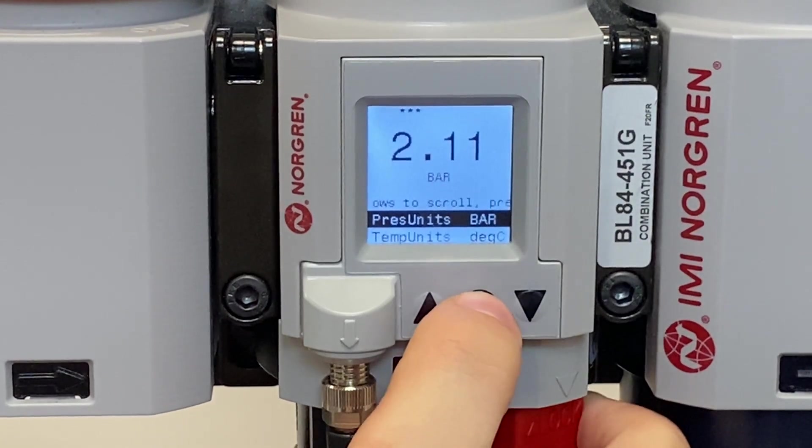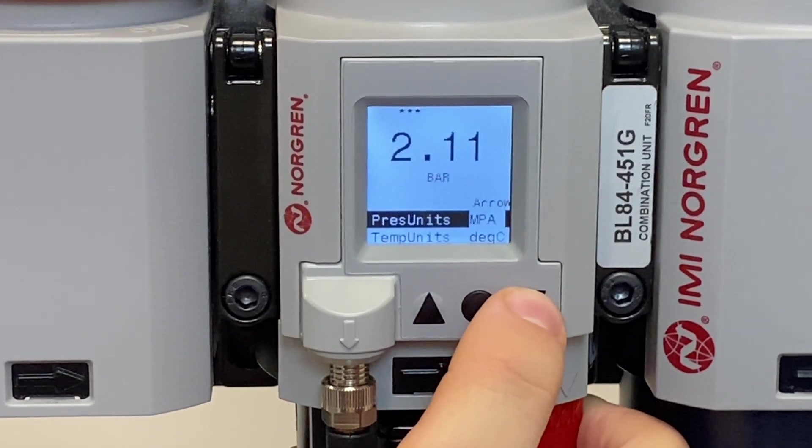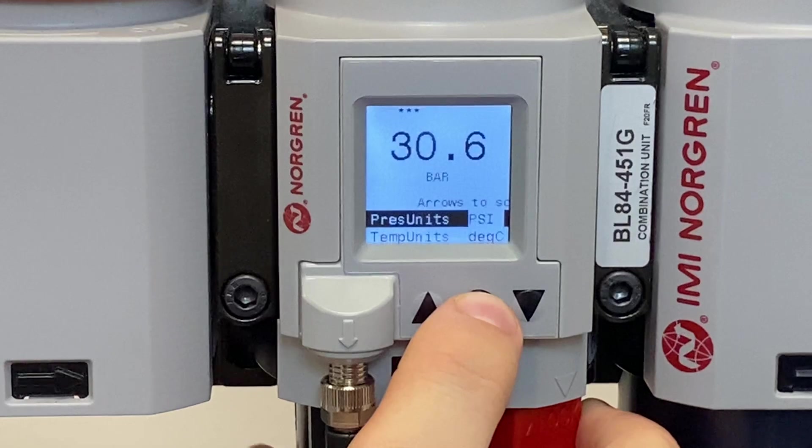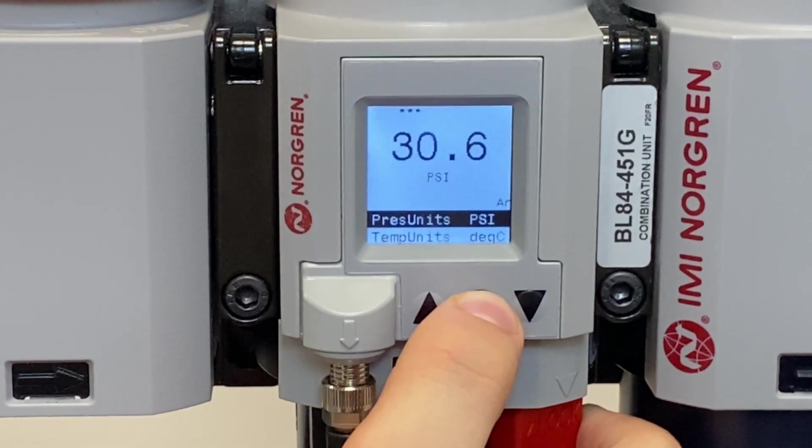Single press once. We can take it through MPa or PSI, so if we select PSI there and then long press to take us back out of the menu.